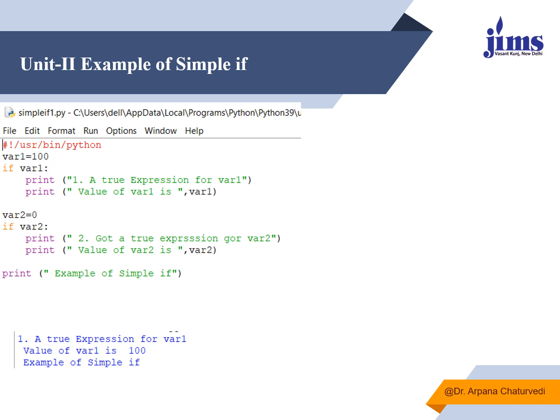In this example, variable `var1` has a value of 100. I check: if `var1` is true, it will print that it got a true expression value and display the value of `var1`. Then `var2` is set to 0 — it checks whether it returns true. Since `var1` holds 100, the condition is true and we get output for `var1`. Since `var2` holds a false value, that `if` block is not executed. The statement outside the `if` block executes at the end.